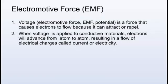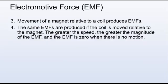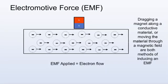Voltage, or electromotive force, is a force that causes electrons to flow because it can attract or repel. When voltage is applied to conductive materials, electrons will advance from atom to atom, resulting in a flow of electrical charges called current or electricity. Movement of a magnet relative to a coil produces electromotive forces in the coil. The same electromotive forces are produced if the coil is moved relative to the magnet. The greater the speed, the greater the magnitude of the EMF, and the EMF is zero when there is no motion. Dragging a magnet along a conductive material or moving the material through a magnetic field are both methods of inducing an EMF.